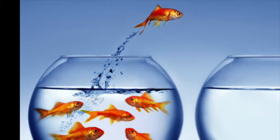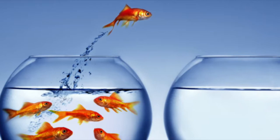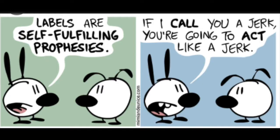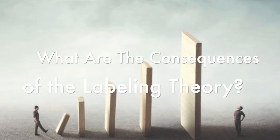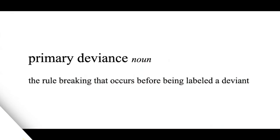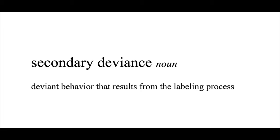The second topic of the film is the labeling theory. According to our book Revel, the labeling theory is the view of deviant behavior that stresses the importance of society in defining what is illegal and in assigning deviant status to particular individuals, which in turn dominates their identities and behaviors. There are two types of deviants: primary deviants and secondary deviants. Revel defines primary deviants as the rule-breaking that occurs before being labeled a deviant, and it defines secondary deviants as deviant behavior that results from the labeling process.